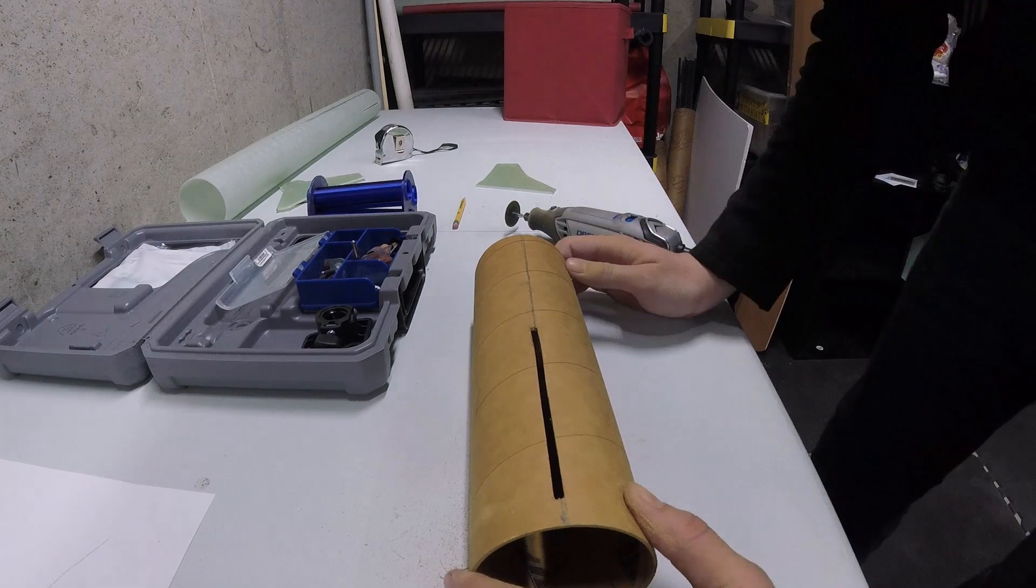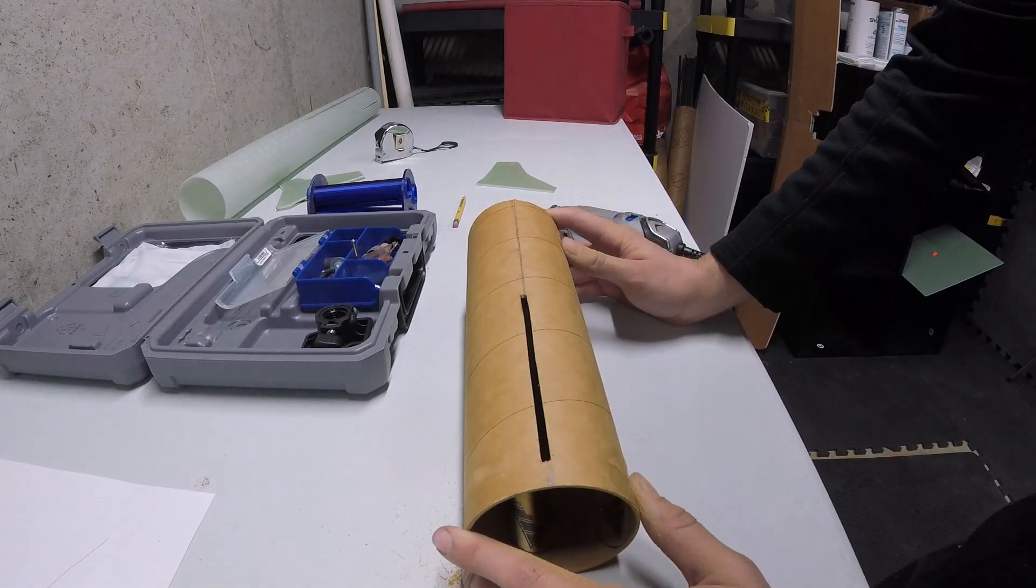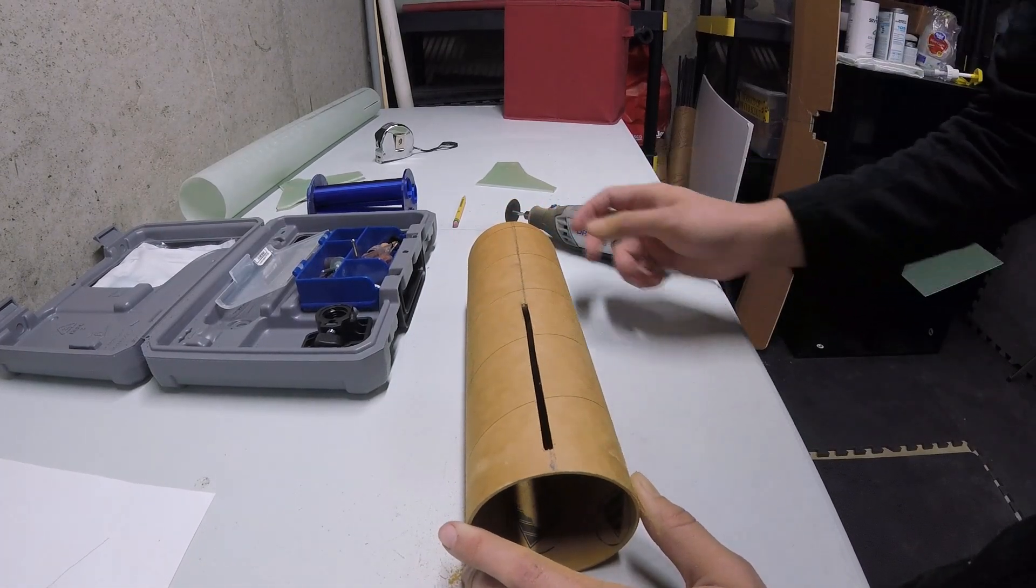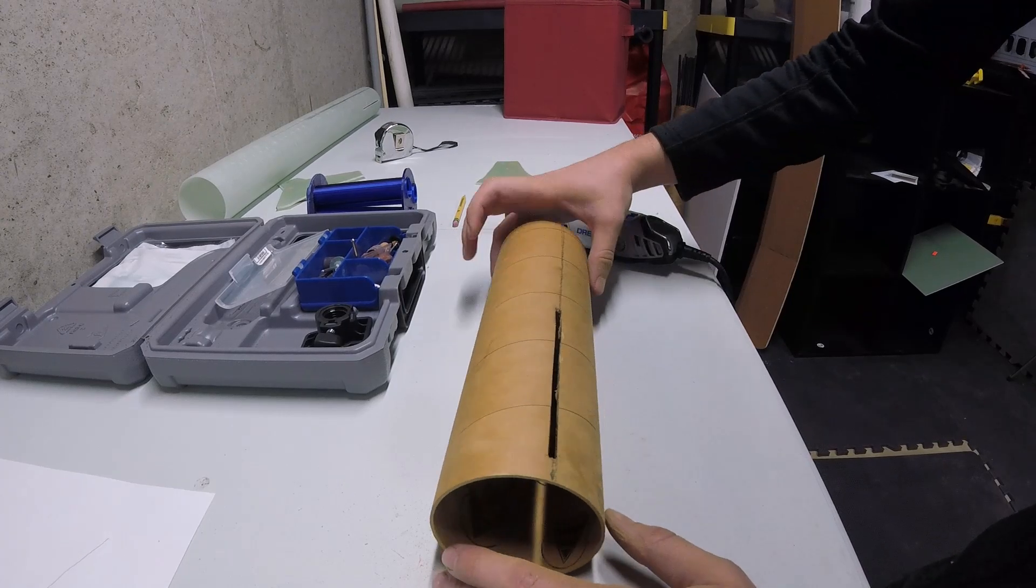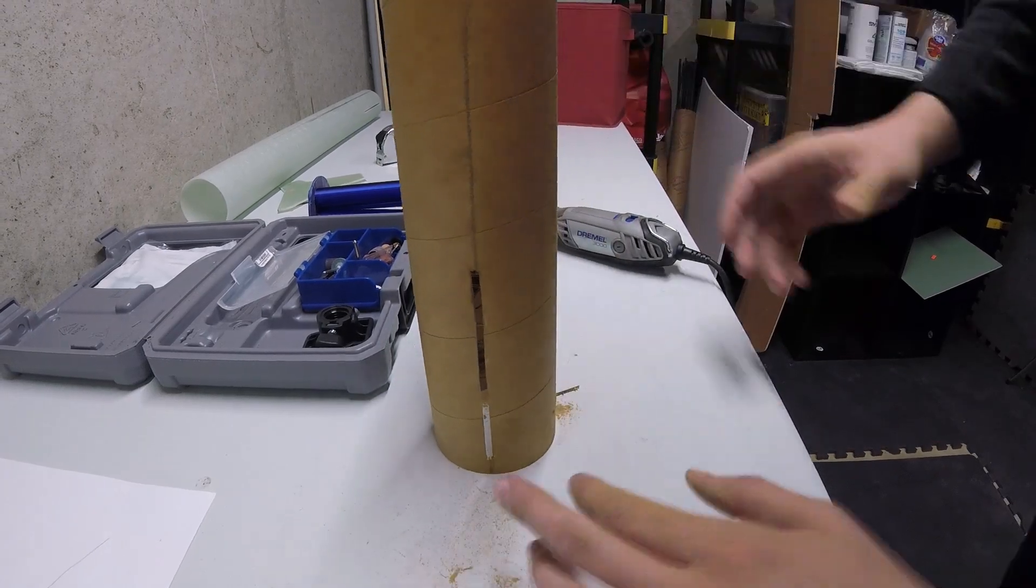Alright, and just like that you have your slot cut in there. Now you just need to do that two more times for a three-fin rocket, or three more times for a four-fin rocket. So that, guys, is how you cut a fin slot into a body tube.